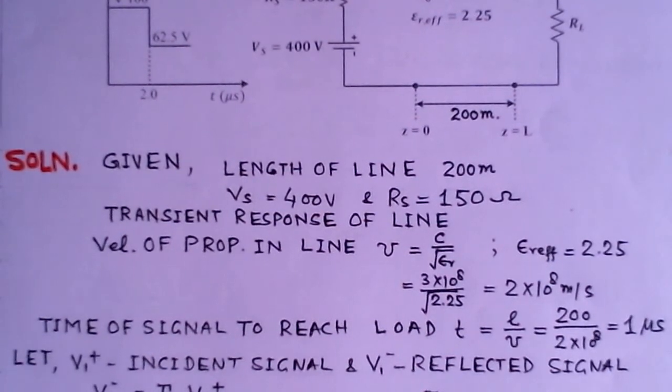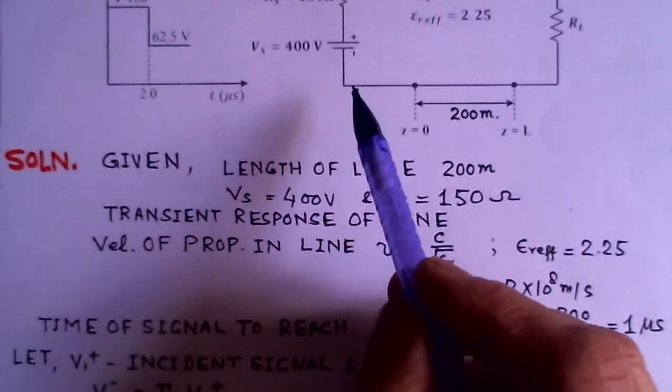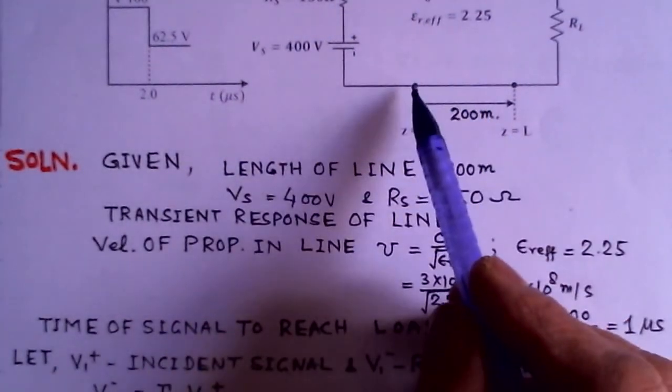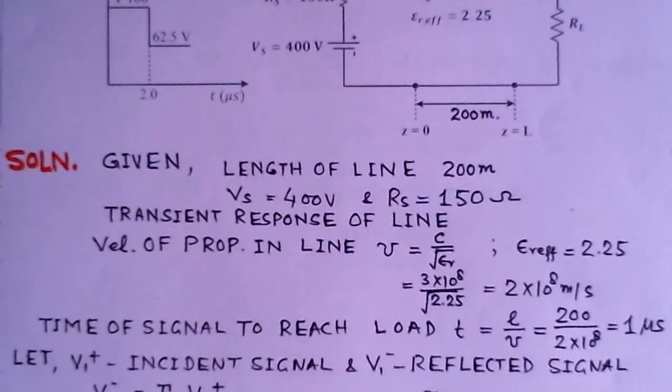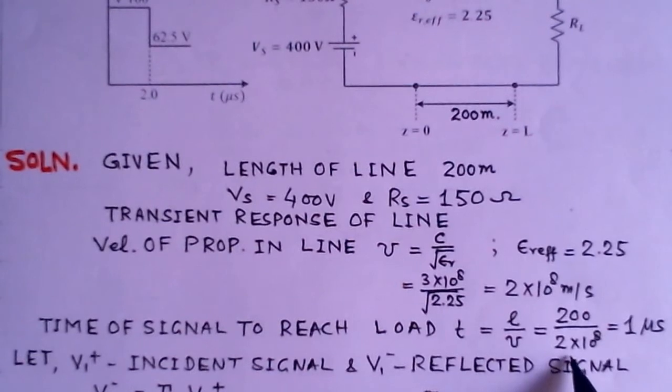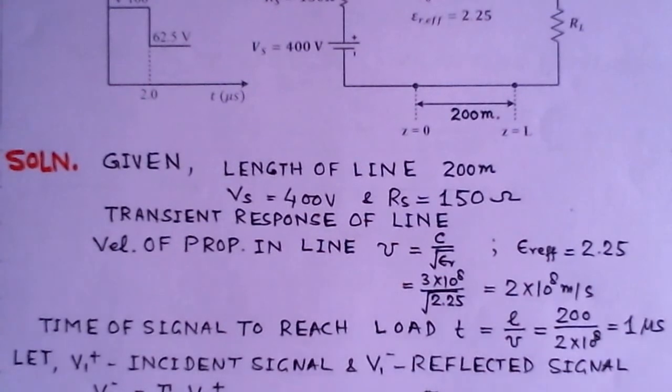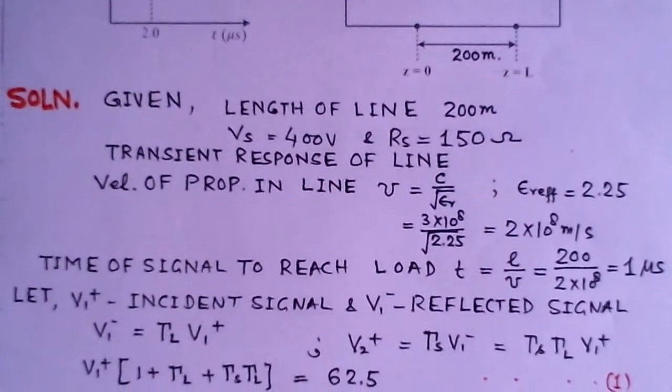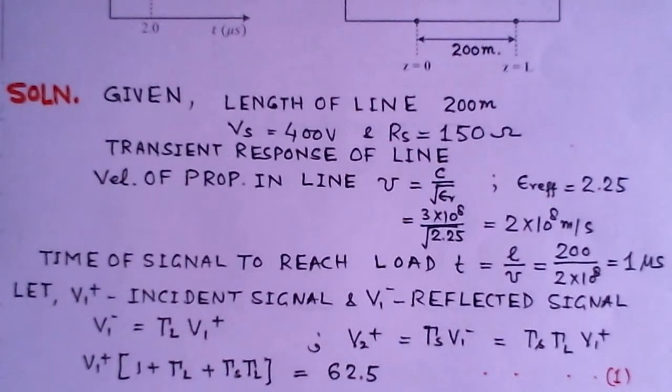Now we would like to find the time for the signal to reach to the load. That means from the source, from Z equals to zero to the load, how much time it takes for the transmission line to reach. So T would be L over V. L is 200 meters and velocity is 2 into 10 power 8. So this is 1 microsecond. So it takes 1 microsecond for the signal to reach from the source to the load.